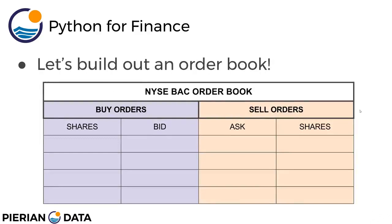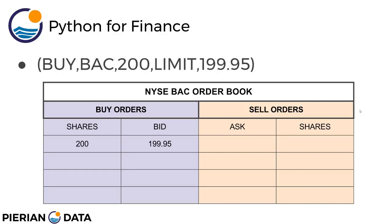So let's actually build out an order book. We're going to pretend we have the order book for the New York Stock Exchange, specifically for BAC — that is the Bank of America stock, so BAC is the ticker. The New York Stock Exchange just opened and we're going to get our first buy order. The very first order that comes in is a buy order for Bank of America stock, going into this BAC order book. They want to buy 200 shares and the limit price they're willing to pay is $199.95. Right now there's no one selling — it's still the very first order — and we need to wait until someone comes in and wants to sell.